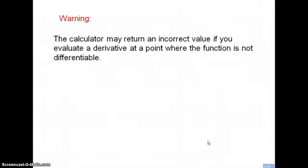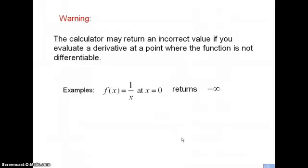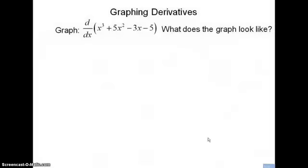Your calculator may return an incorrect value if you evaluate a derivative at a point where the function is not differentiable. For instance, if you entered the function 1/x and looked at outputs near x equals zero, your calculator may tell you it's a very large negative number, when clearly at zero it should give you an error. Sometimes your calculator may tell you the output of the absolute value function at zero is plus or minus one — so don't blindly trust what your calculator tells you.